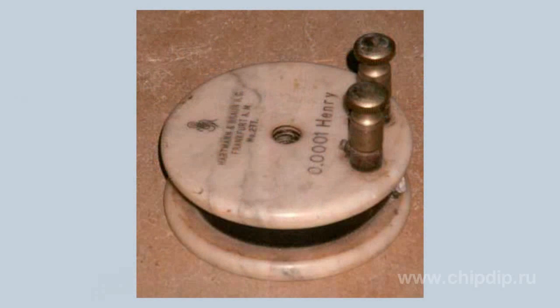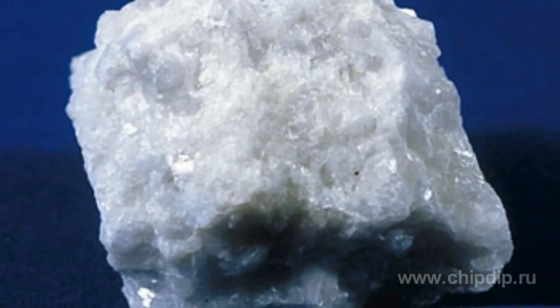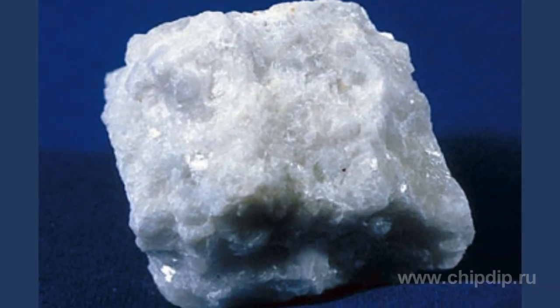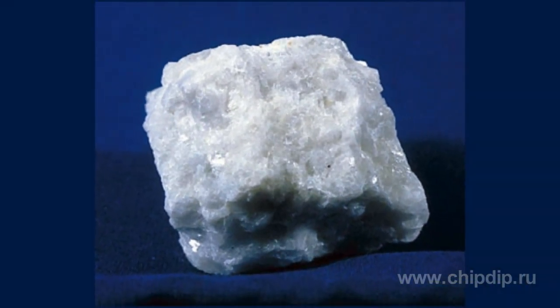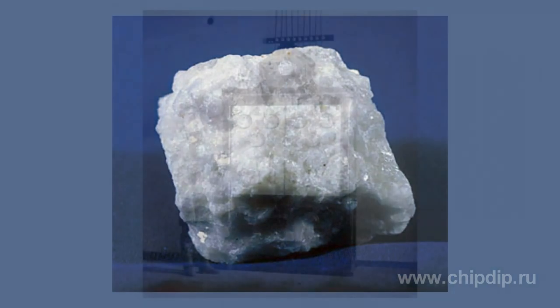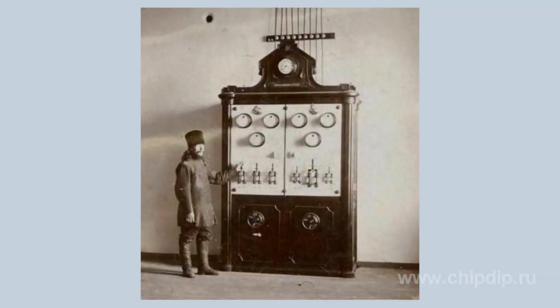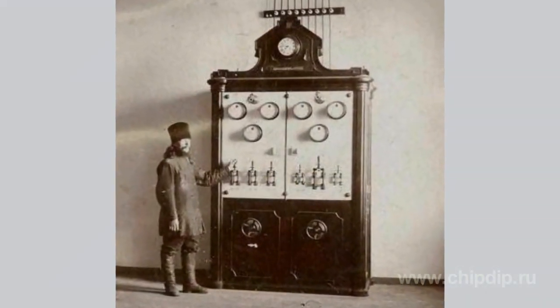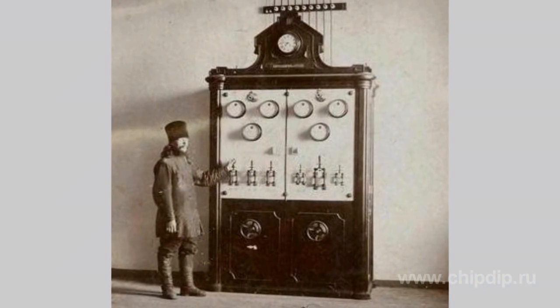The third insulating material widespread later was marble – the natural form of calcium carbonate. Compared to glass, it has high strength, is not fragile, and can be processed without special tools. Due to this, marble, since the mid-19th century, was one of the main electrical materials.